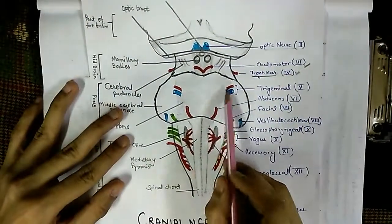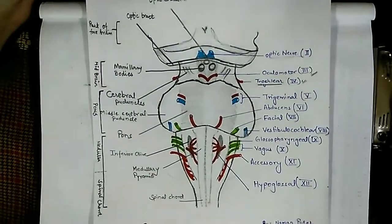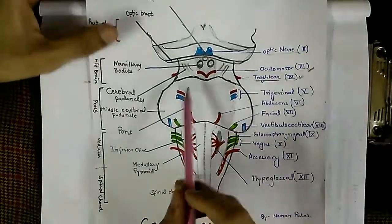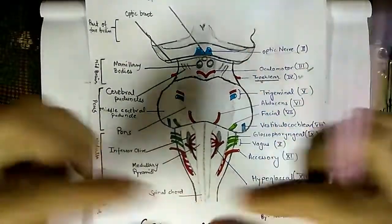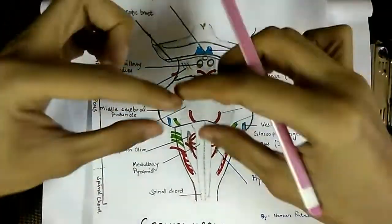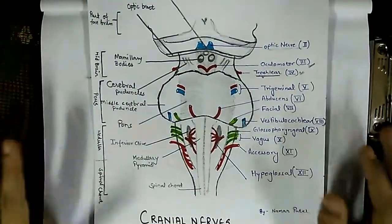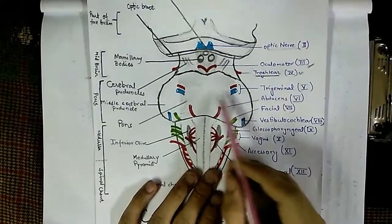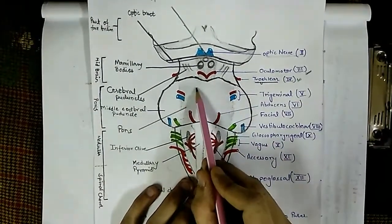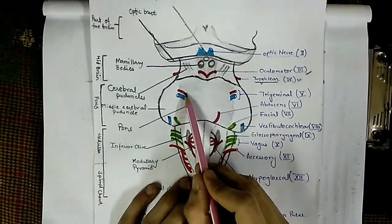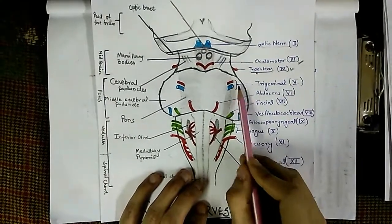Just below the midbrain comes the pons. The pons acts as a bridging structure with many bridging neurons. At the superior lateral aspect of the pons, we can find the trigeminal nerve originating.